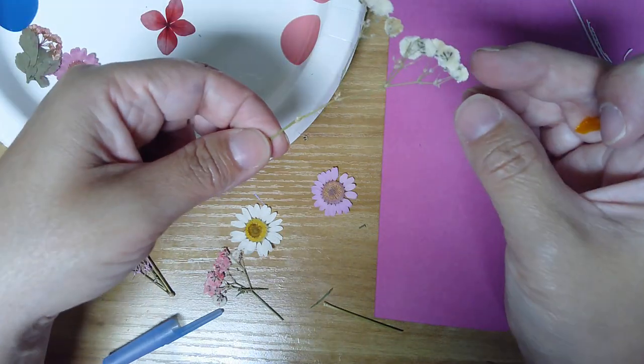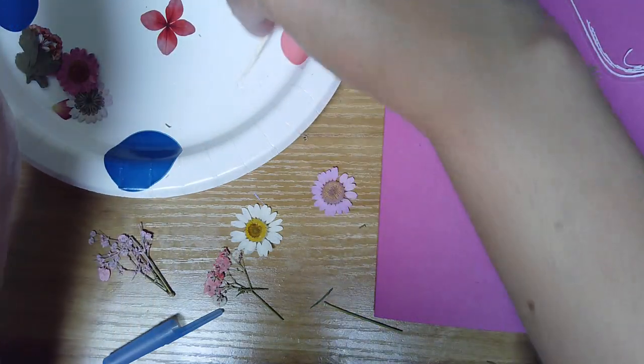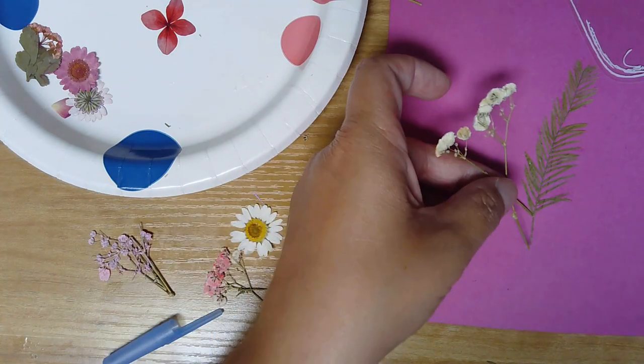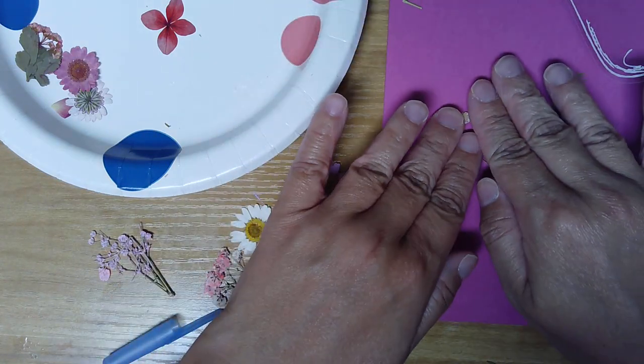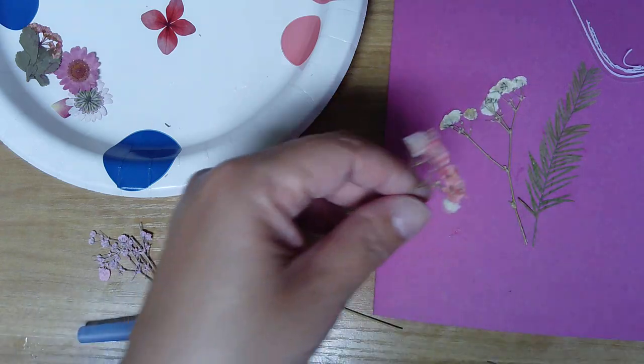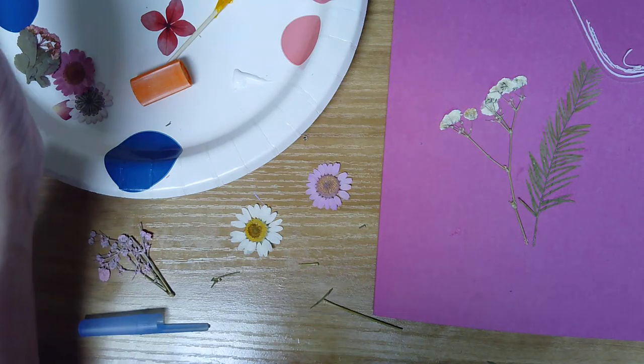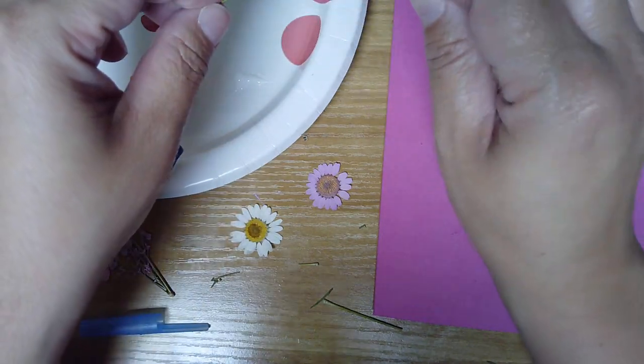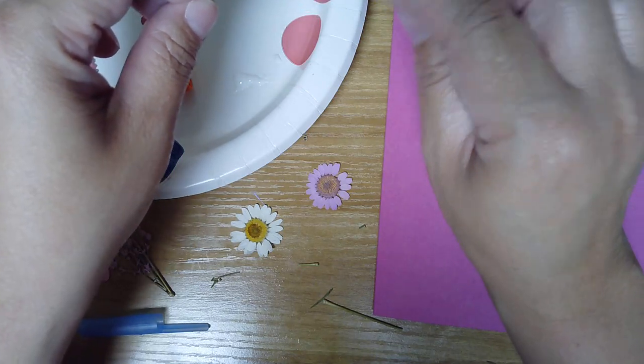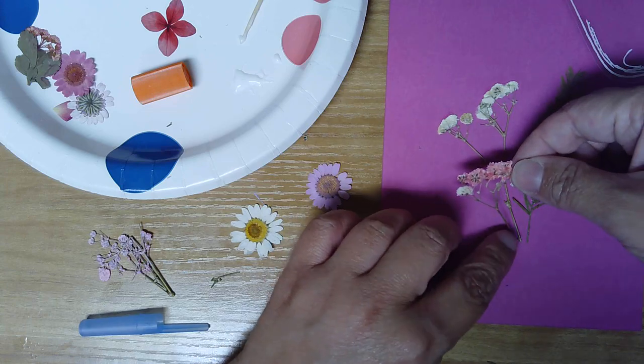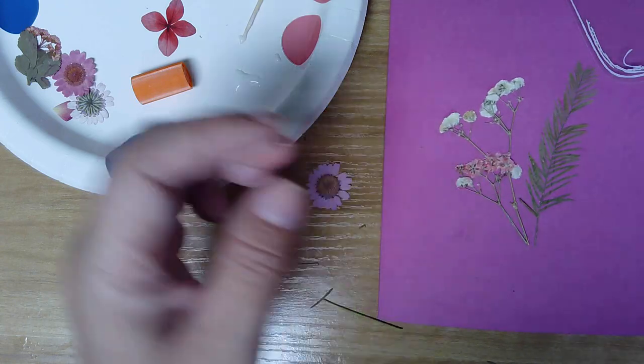But these are—I can tell they were fluffier little flowers, so there's more than one layer, so I'm not too worried about how much glue I'm putting on this one. Same for this one, it's a fluffy little one.